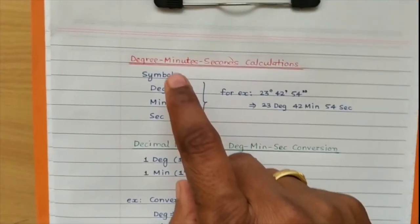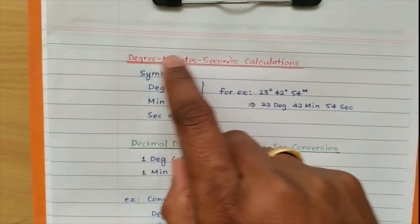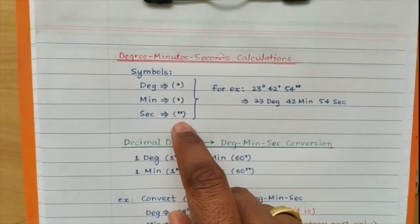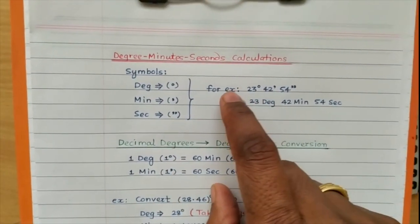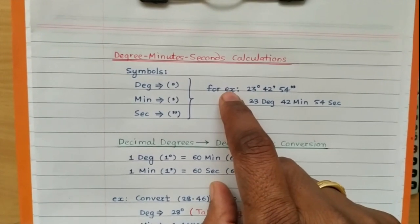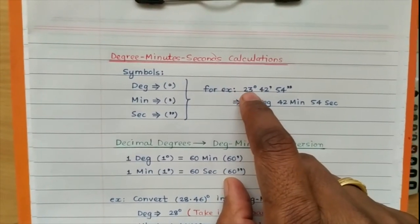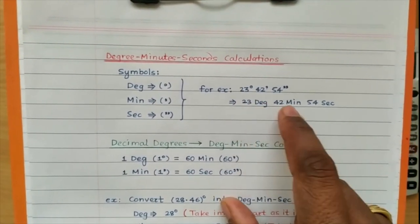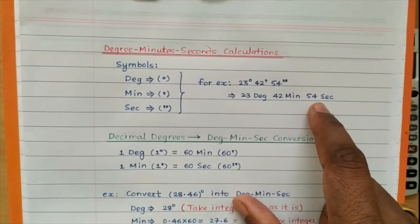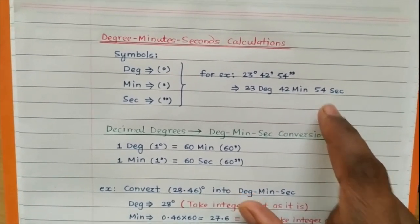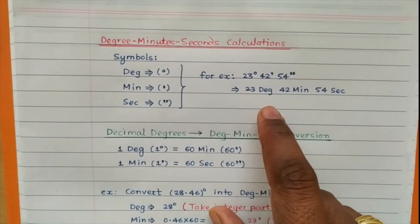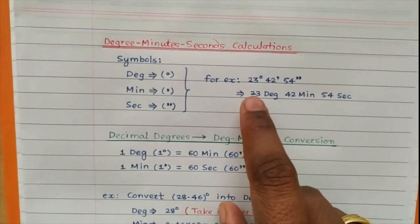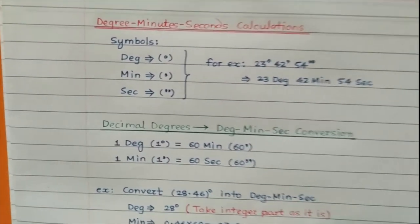Let us understand what degrees, minutes and seconds are. These are the respective symbols for degree, minute and second. For example, if your angle is given as 23° 42' 54", it means 23 degrees, 42 minutes and 54 seconds. In many electrical and physics calculations we will need to use this type of angle.